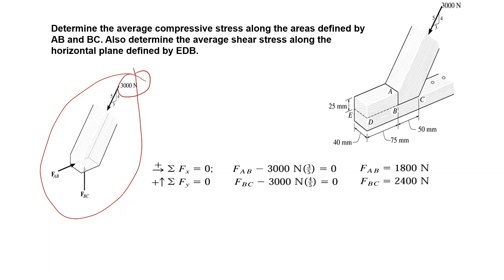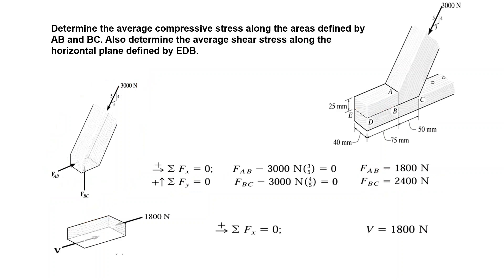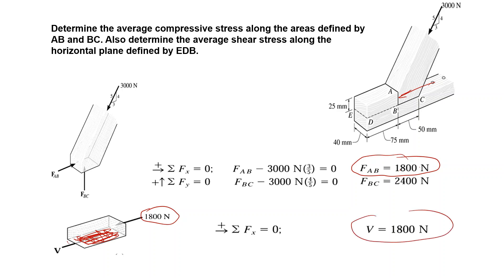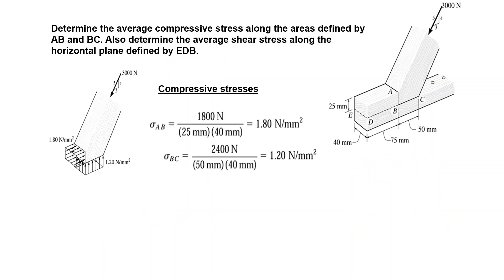Drawing the free body diagram with forces acting at two points and writing equilibrium in x and y, we find that force FAB is 1800 N and force FBC is 2400 N. To find the shear stress in plane ADB, we use the previously determined force of 1800 N, which also acts as the shear force in that plane.